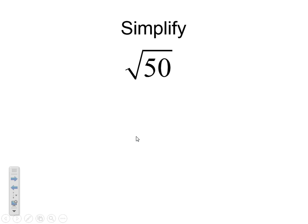Let's try the square root of 50. What's a perfect square that goes into 50? Well, that would be 25. How many times does 25 go into 50? That would be 2. So 25 times 2 is 50. The square root of 25 is 5. And I'd bring down my square root of 2.